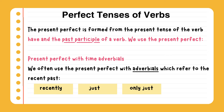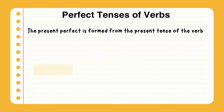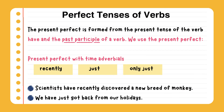The present perfect with time adverbials. We often use the present perfect with adverbials which refer to the recent past. The signal words are: recently, just, only just. Examples: Scientists have recently discovered a new breed of monkey. We have just got back from our holidays.